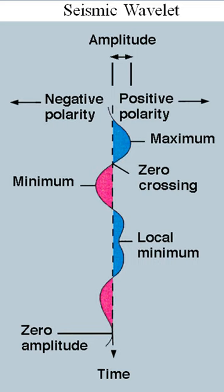The second identity of the first pair is a refinement equation for the father wavelet ϕ. Both pairs of identities form the basis for the algorithm of the fast wavelet transform.